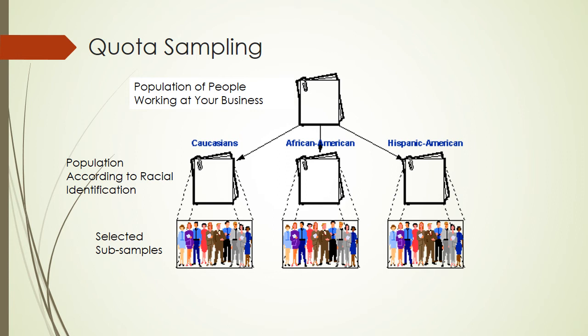However, quota sampling has its drawbacks. Notice in this particular example, I didn't think about the ratio of men to women — that might be important. I also didn't think about things like social or class identification. I might have a lot of people who make under $50,000 and very few people who make over $50,000 working at my business, but I didn't take that into account in my quota sampling. So when quota sampling, you have to try to think of all the different relevant characteristics and identifications — all the relevant groups that exist in your target population — and try to account for those as you're coming up with your quotas.